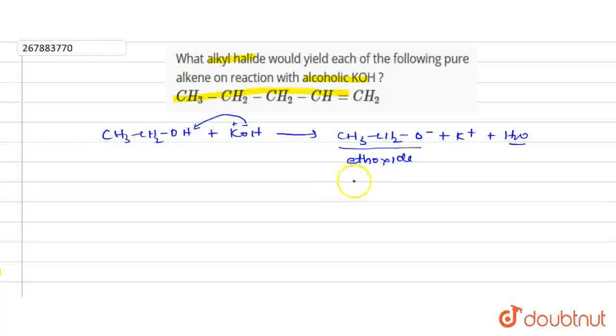This ion is very basic. This is used as base. If we take alcoholic KOH, we extract hydrogen from alkene. After removing it, we get alkene. Basically, we create this product.